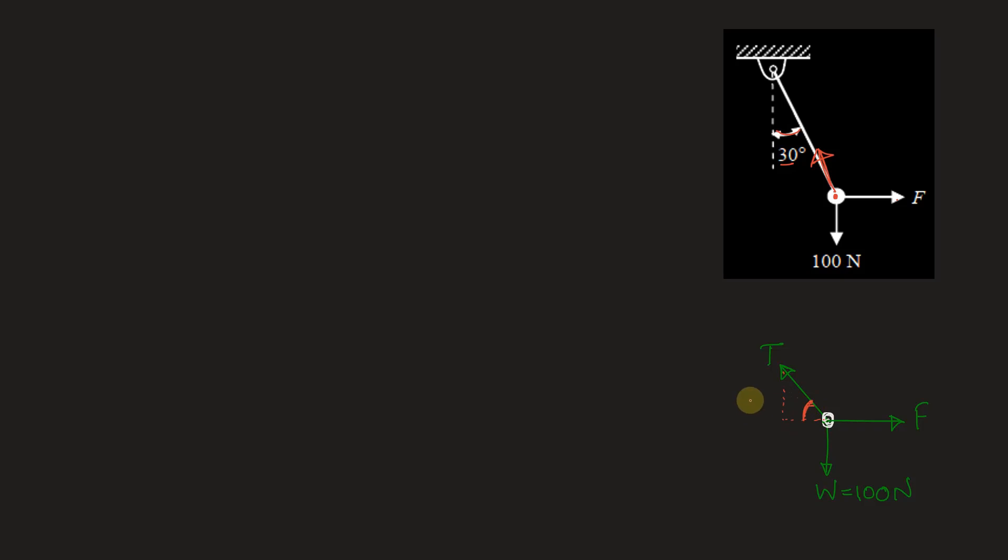Now by using the equation of equilibrium, we will start with the known quantity. So the known value is the vertical force. This being the x direction and this being the y direction, then we can write summation of forces in y direction equal to 0 by equation of static equilibrium.